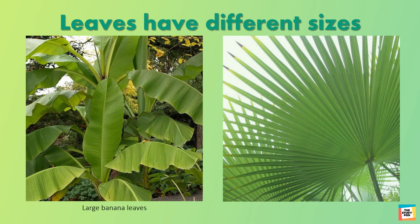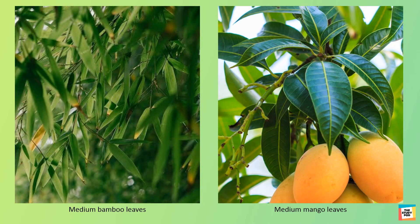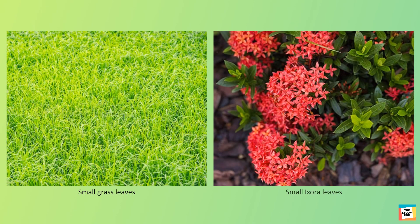Leaves come in all sizes. They can be large, like banana or palm leaves. They could be medium sized like bamboo and mango leaves. Or they could be as small as grass leaves.